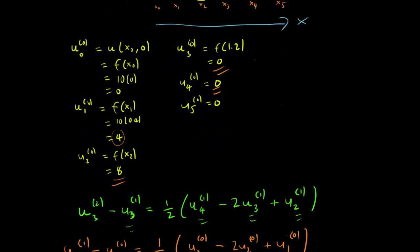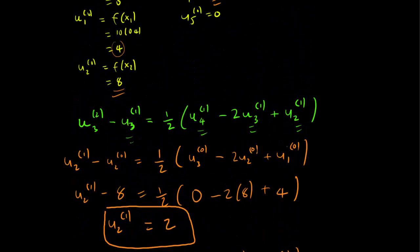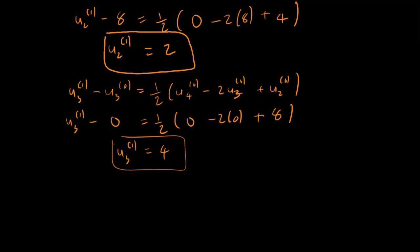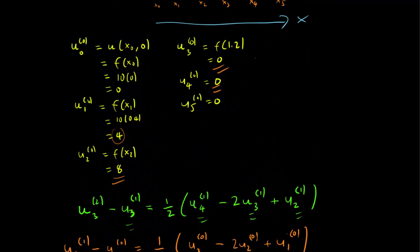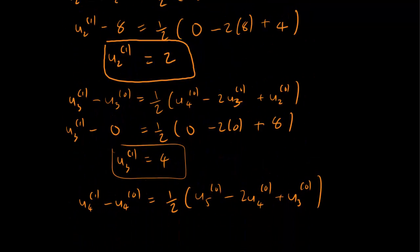So the green dot is u_4^1 minus u_4^0 is equal to 1 half u_5^0 minus 2 u_4^0 plus u_3^0. But you notice that u_4^0, u_3^0, and u_5^0, they're all 0. So this is all 0, 0, 0, 0, 0, 0, which implies that u_4^1 is equal to 0.